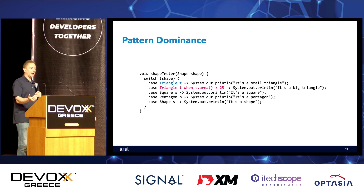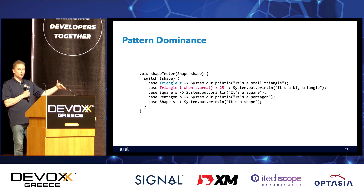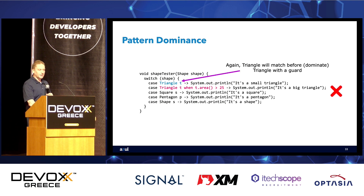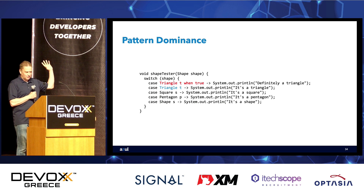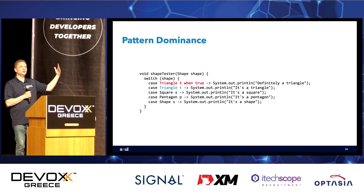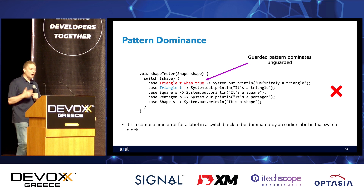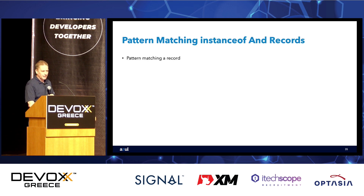We also need to be careful with guarded patterns. If we put `case Triangle t` (unguarded) above `case Triangle t when t.area() > 25` (guarded), the first will always match first and the guarded pattern becomes unreachable — the compiler will reject that. Similarly, `case Triangle t when true` would dominate an unguarded `case Triangle t`. It's a compile-time error for a label in a switch block to be dominated by an earlier label.